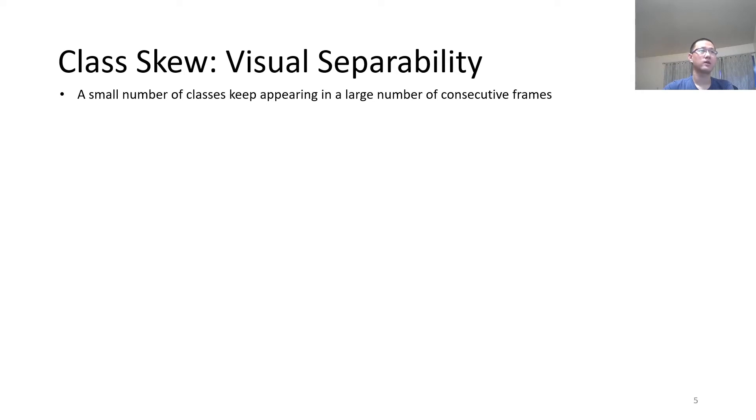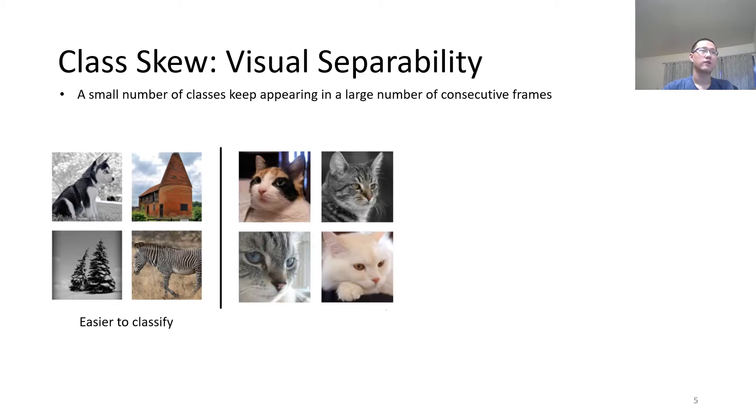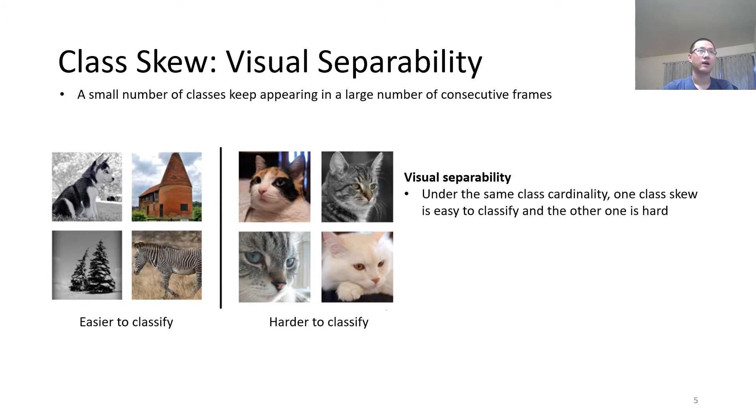The second type of information is visual separability. Suppose we want to classify these four types of objects. It is quite easy. However, if we want to classify these four types of objects, it is much harder. Visual separability means that under the same class cardinality, one class skew is easy to classify and the other one is hard. Intuitively, we can use a more compact model when the class skew is easier to classify.